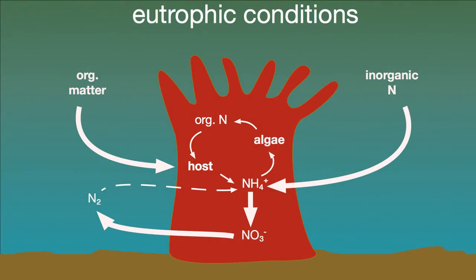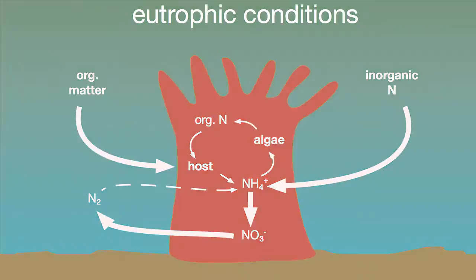We assume that microbial nitrogen fixation may help to fill the gap when nitrogen availability is limited. In times of excess nitrogen availability, on the other hand, decreased nitrogen fixation rates in combination with nitrification and denitrification processes may help to remove nitrogen from the coral holobiont.